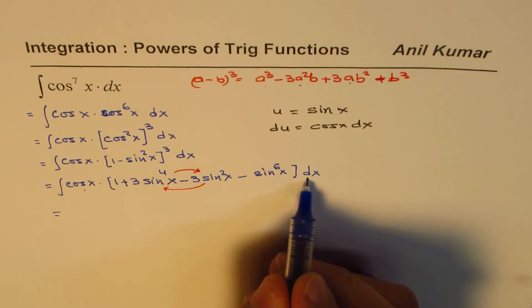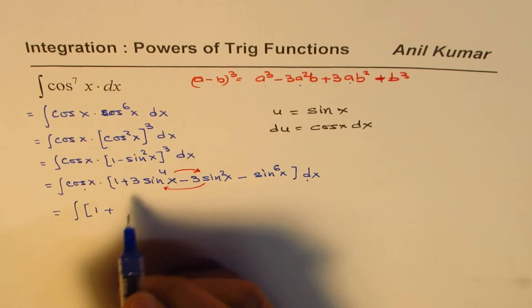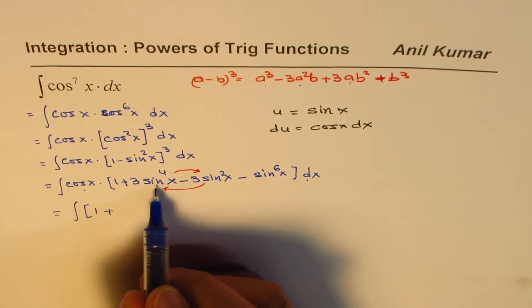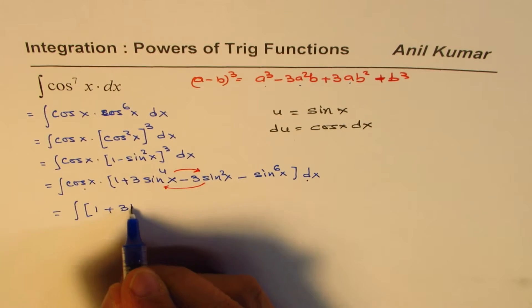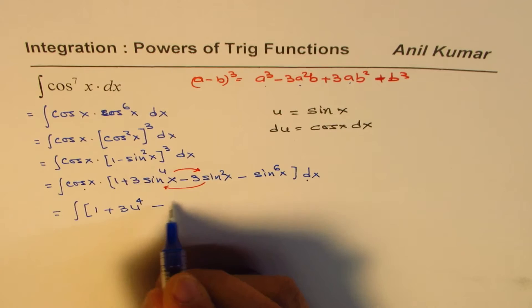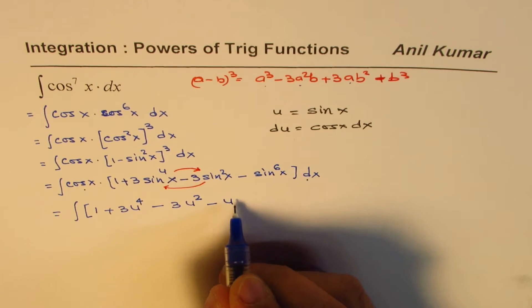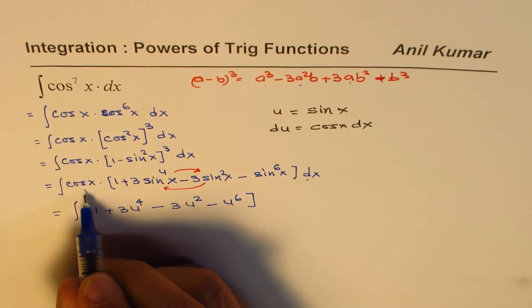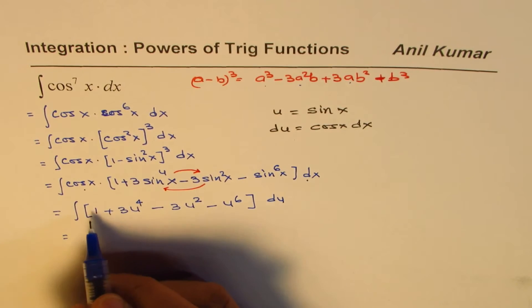So using this substitution, it becomes very simple to solve this. So cos x dx could be written as du. So we could write this expression as 1 plus 3u to the power of 4 minus 3u square minus u to the power of 6. And cos x dx will be du.